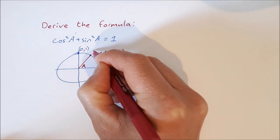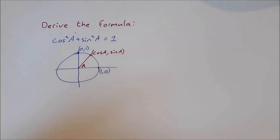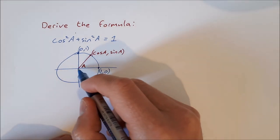If you know your unit circle, you'll know where that comes from. Now we're going to find the distance from (0,0) to this point here.